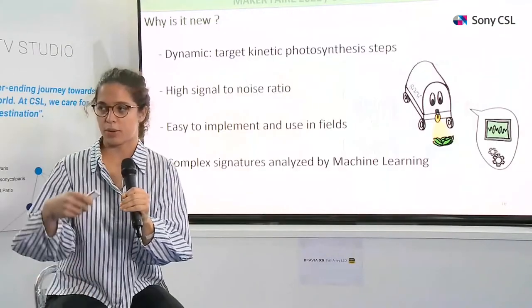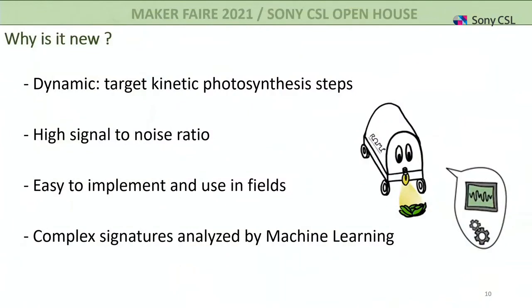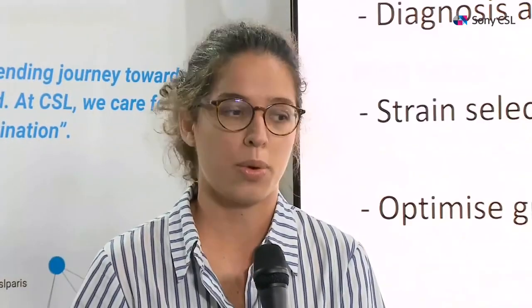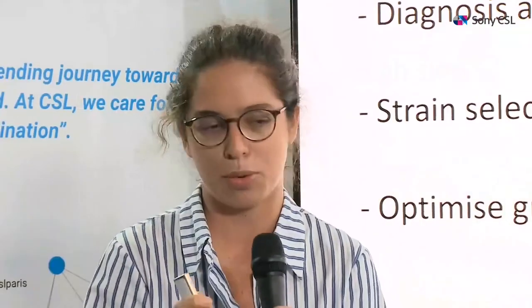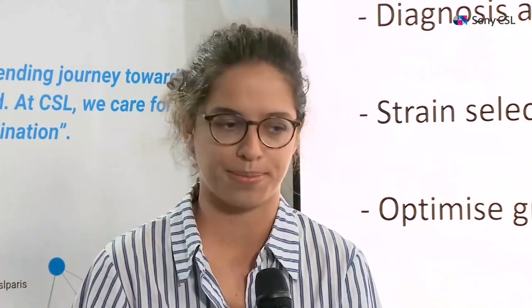The advantages of our approach are that we perform dynamic analysis targeting specific steps, and it achieves a high signal-to-noise ratio due to the frequency analysis method. It will be easy to implement in fields and can be used outdoors. We also want to rely on machine learning for classification of signatures to enable diagnosis. Additionally, we can select strains to see how they behave in certain circumstances and optimize growth conditions — minimizing waste to maximize conversion into sugars.